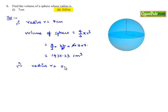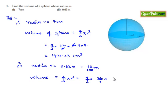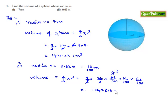Moving on to the second part, the radius of the sphere is given as 0.63 meters, which can be written as 63/100 meters. We find the volume of the sphere as 4/3 × π × r³, that is 4/3 × 22/7 × (63/100) × (63/100) × (63/100). Here 7 goes into 63 nine times and 3 goes into 9 three times, which equals 1.047816 meter cube.